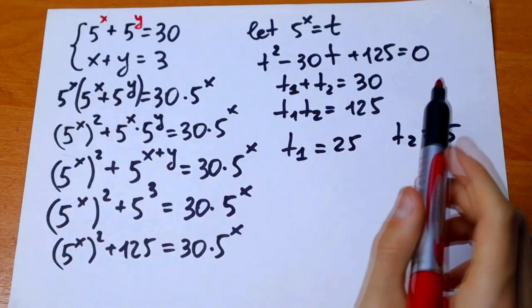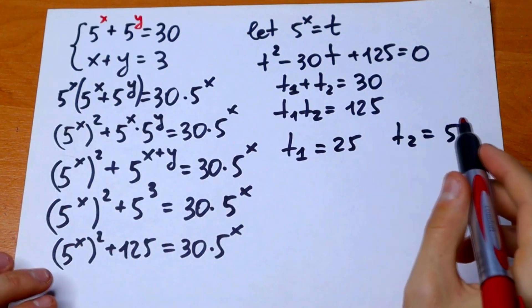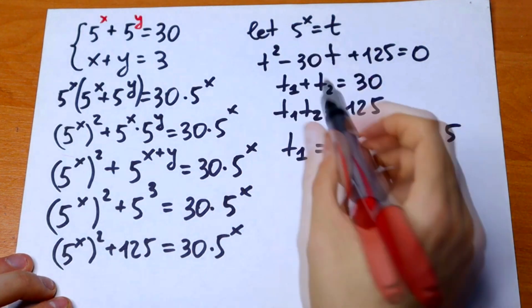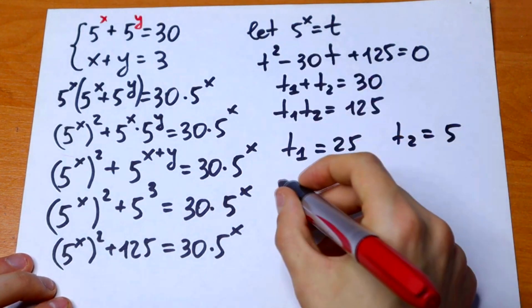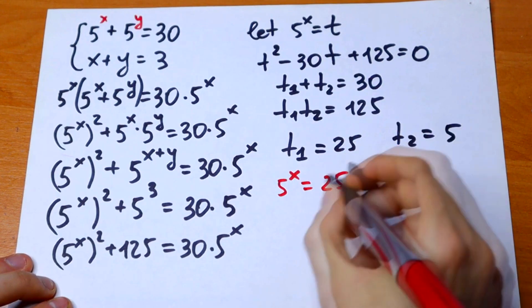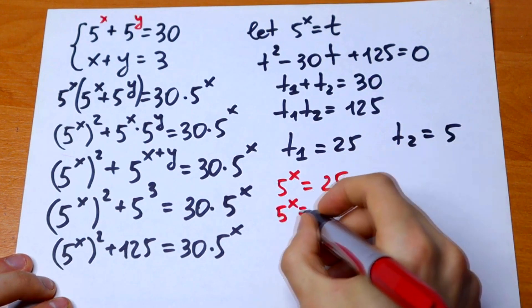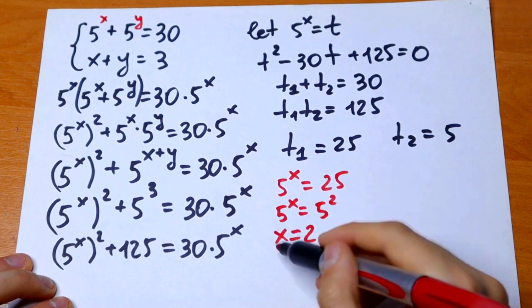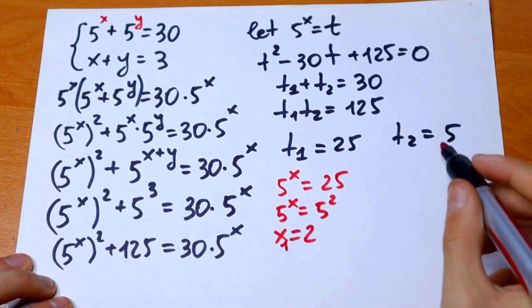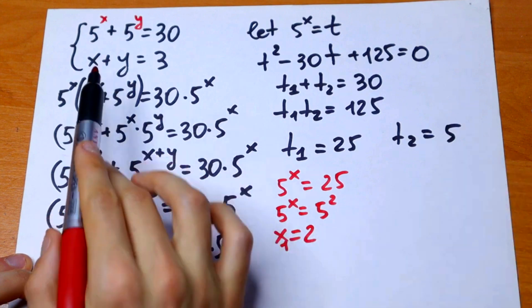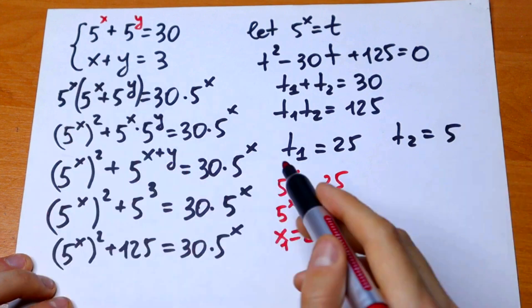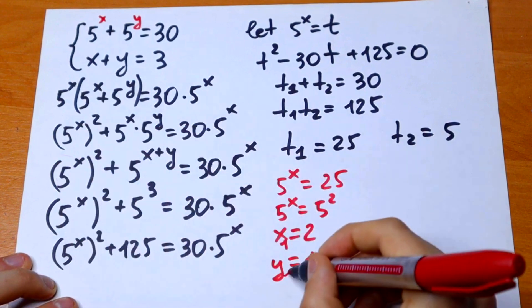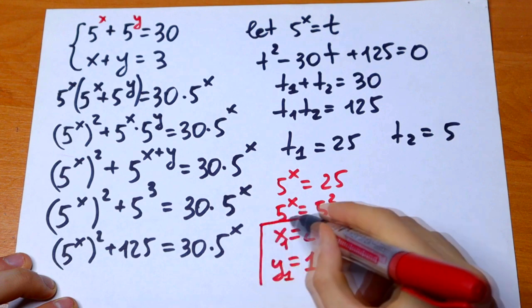From t1 equals 25: since 5 to the power x equals t, we have 5 to the power x equals 25, which equals 5 squared, so x equals 2. This is our first x value. Then since x plus y equals 3, y equals 1. This is our first pair of solutions.